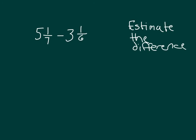Let's estimate a difference. Here we have 5 and 1 sevenths minus 3 and 1 sixths. To estimate the difference, we will round each of those mixed numbers and then subtract. We'll use a number line again so we can see where these numbers fall and what they would round to.